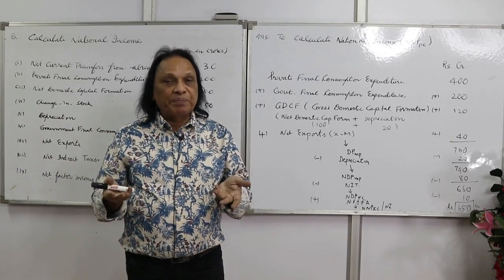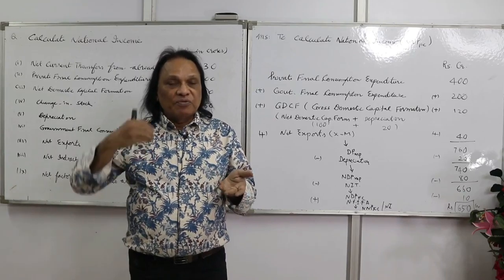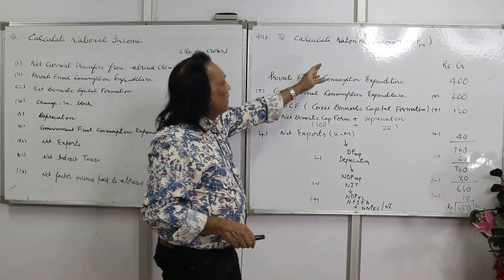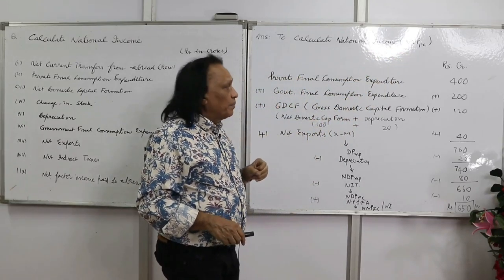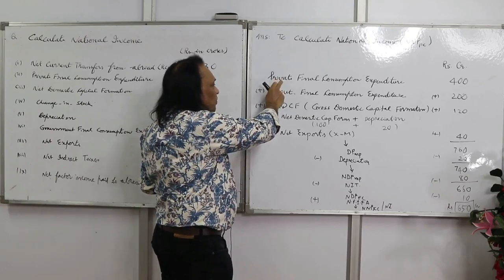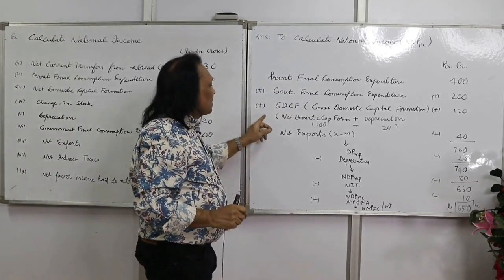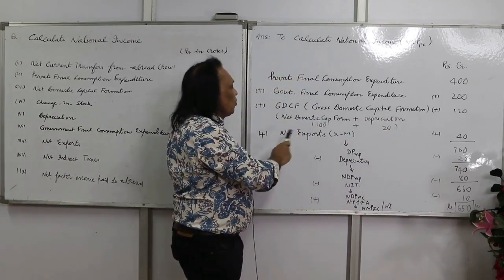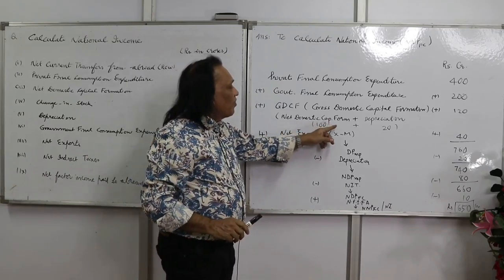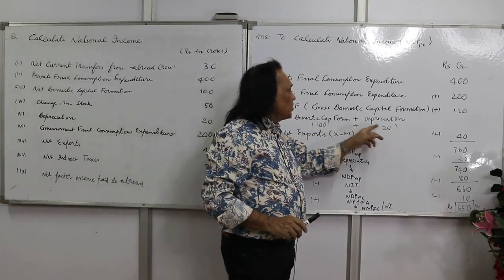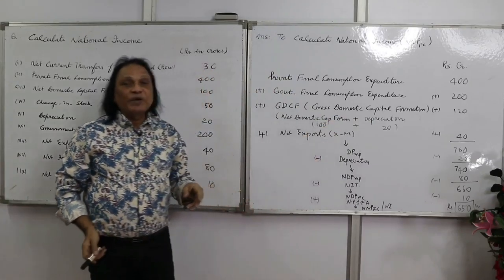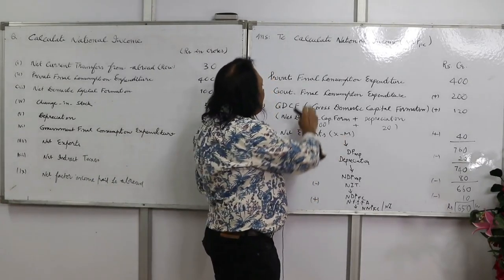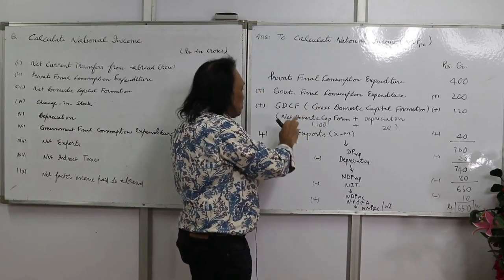Net factor income paid to abroad is 10, so we take it as minus 10. NFIA equals factor income received from abroad minus factor income paid to abroad. To calculate NNP at factor cost: use the formula — private final consumption expenditure plus government final consumption expenditure plus GDCF. Since they gave net domestic capital formation of 100, add depreciation of 20 to get GDCF of 120.